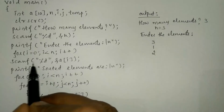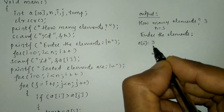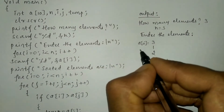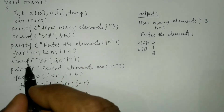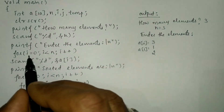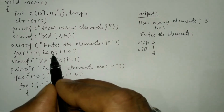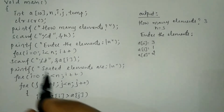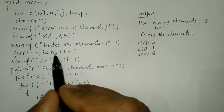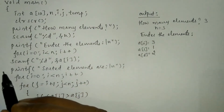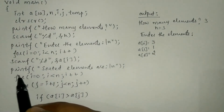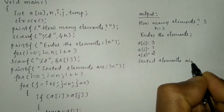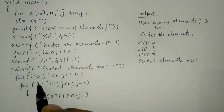For the first iteration, i equals zero, so a[0] is assigned value three. i increments to one — one is less than three, so a[1] is assigned one. Then i becomes two — two is less than three, so a[2] is assigned two. i increments to three — three is not less than three, so the loop exits, and the program prints 'sorted elements are'.